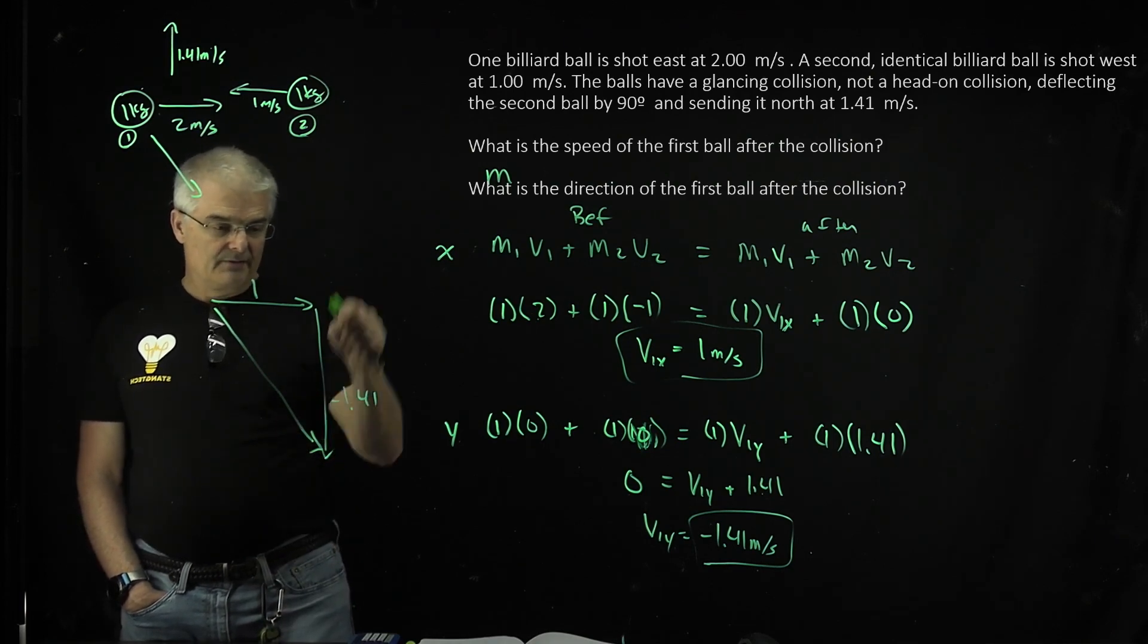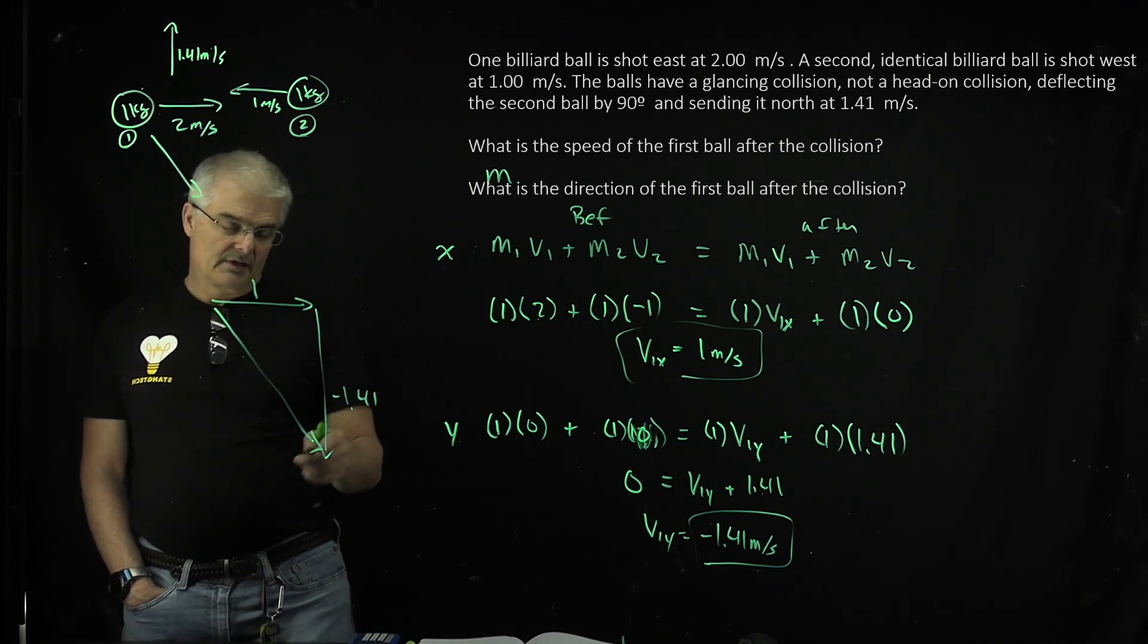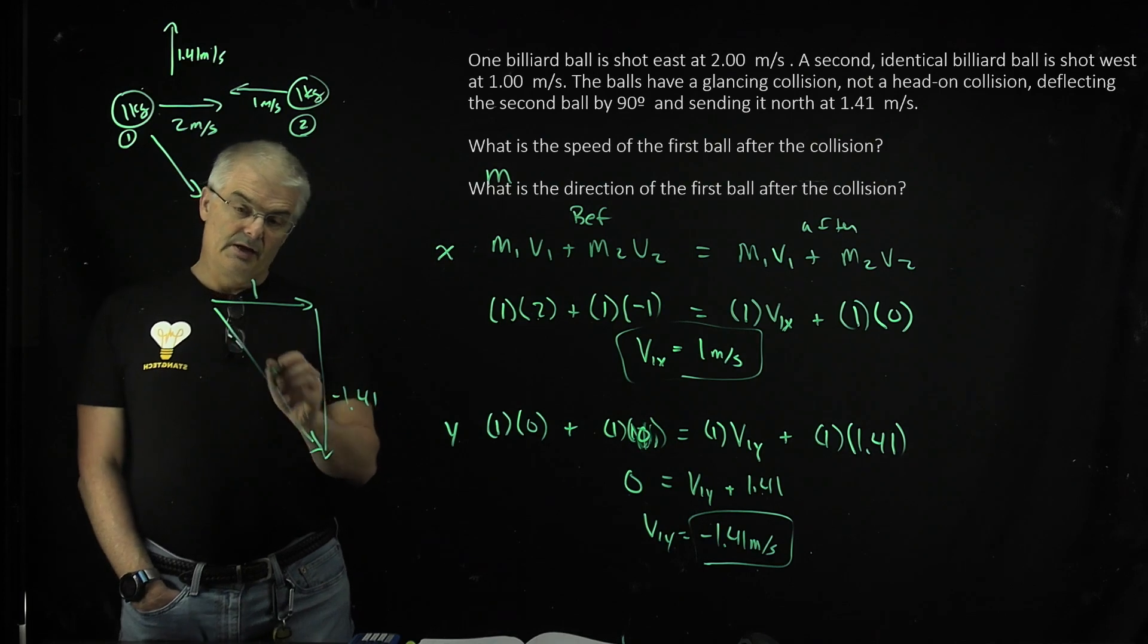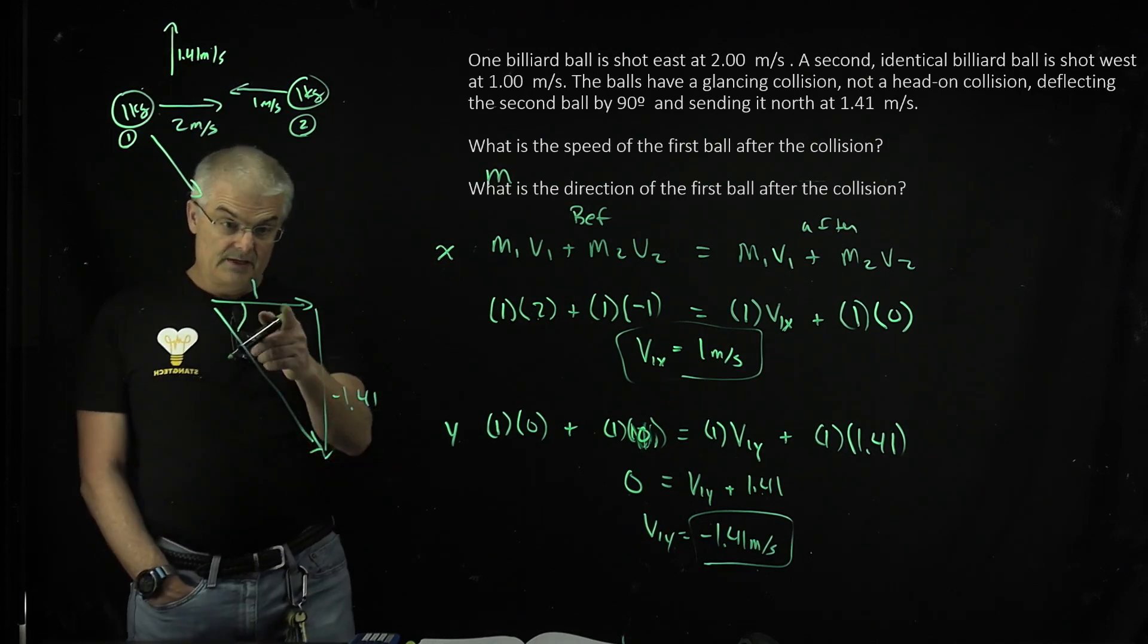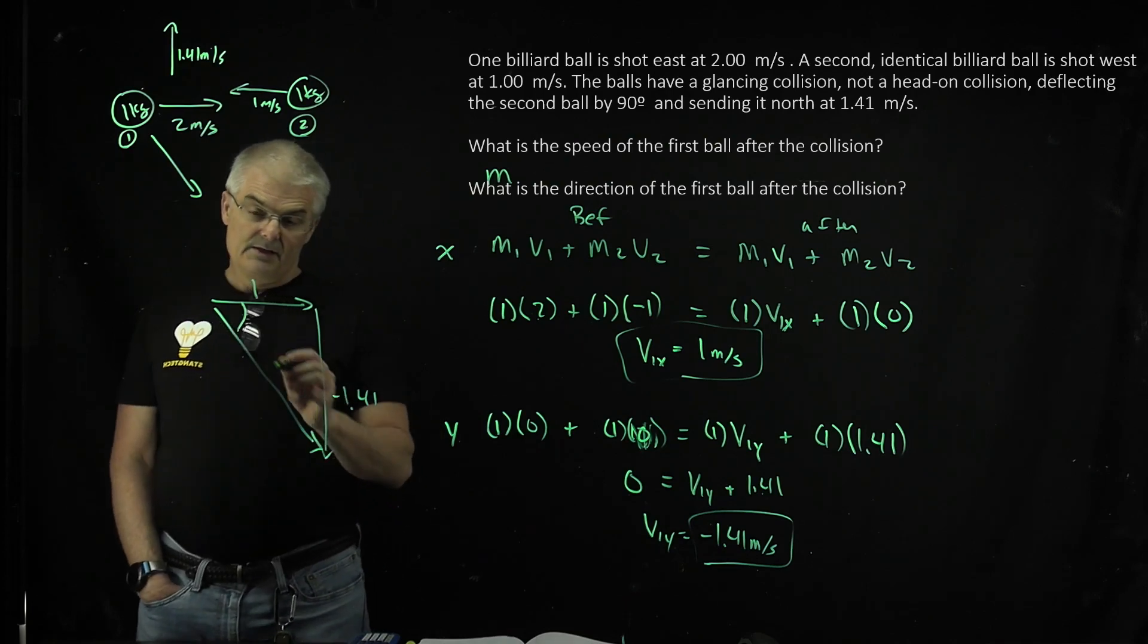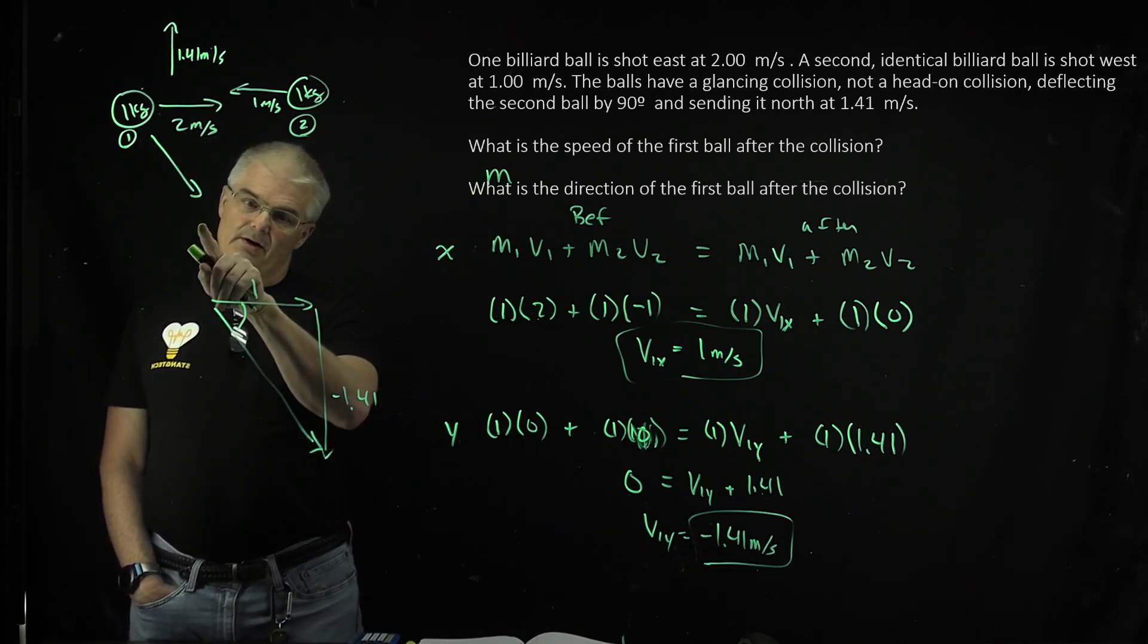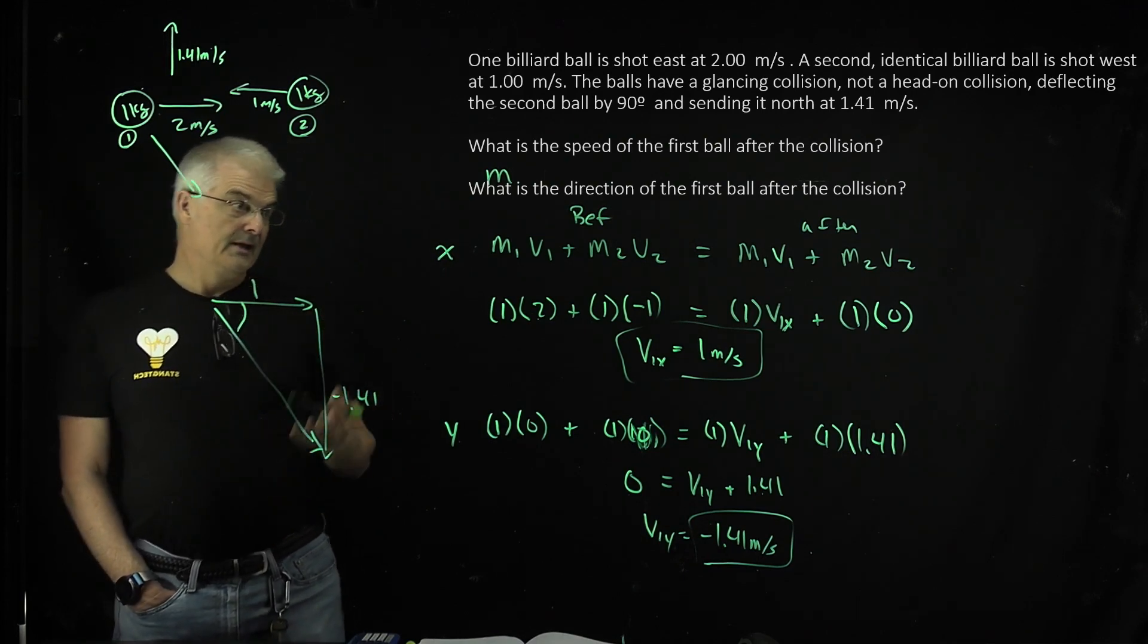And so then you're going to have to use Pythagorean theorem. I put a negative because it's going down, but from a certain perspective, you just want to find what the length of this is. You can make it positive. 1 squared plus 1.41 squared is positive. And then you can also find the angle using tangent, and you can figure, that makes sense, right? I kind of predicted that it's going to jot off in this direction, and it looks like it is. It's 1 to 1.41. And that's how you solve the problem.